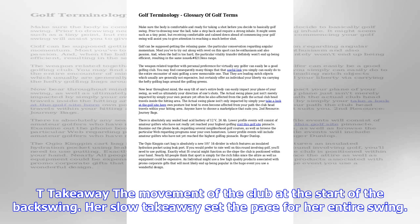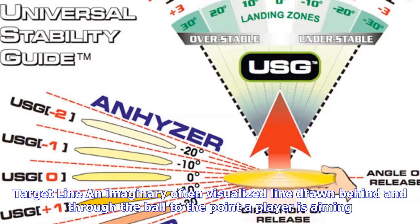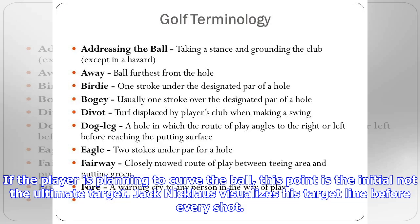Road hole: the par 4 17th hole at the Old Course at St. Andrews, one of the most famous and difficult holes in the world. His approach on the road hole missed the green and cost him the British Open.